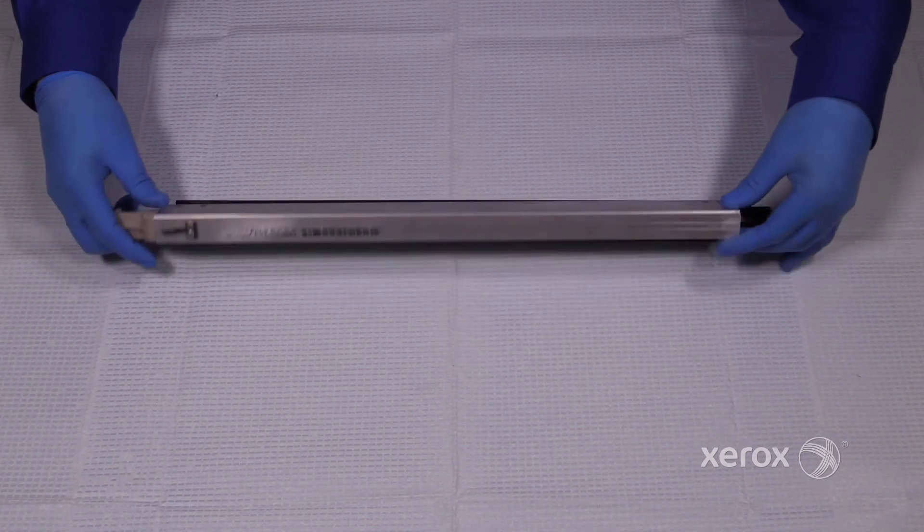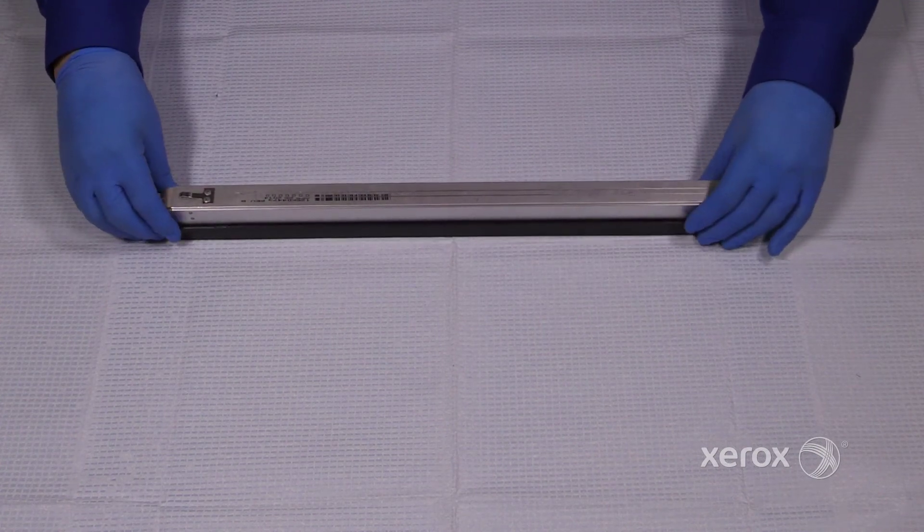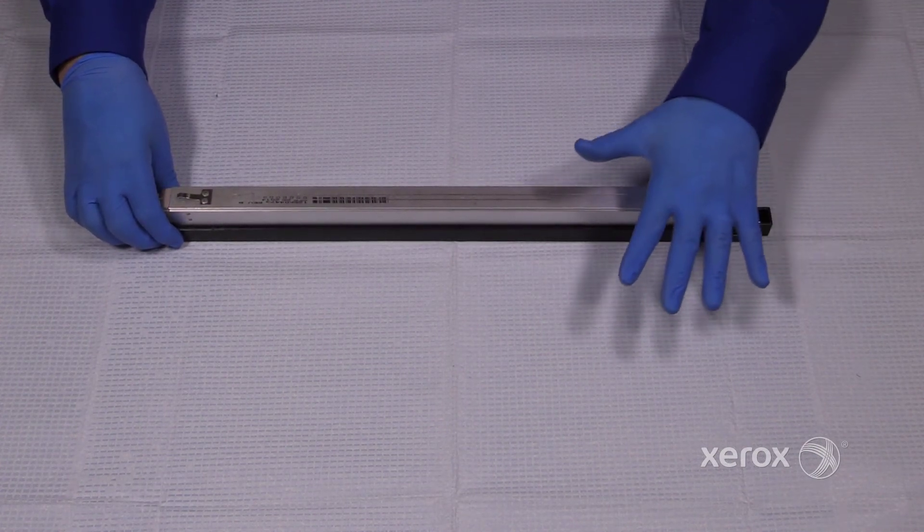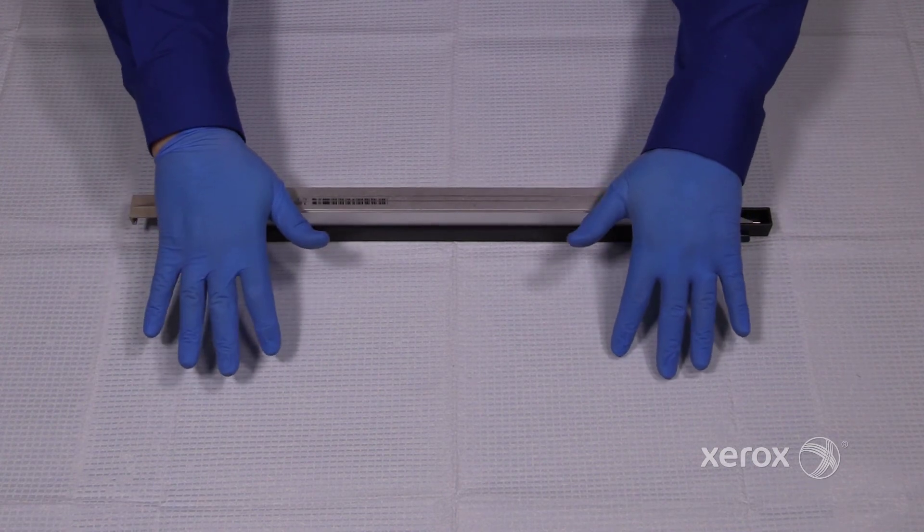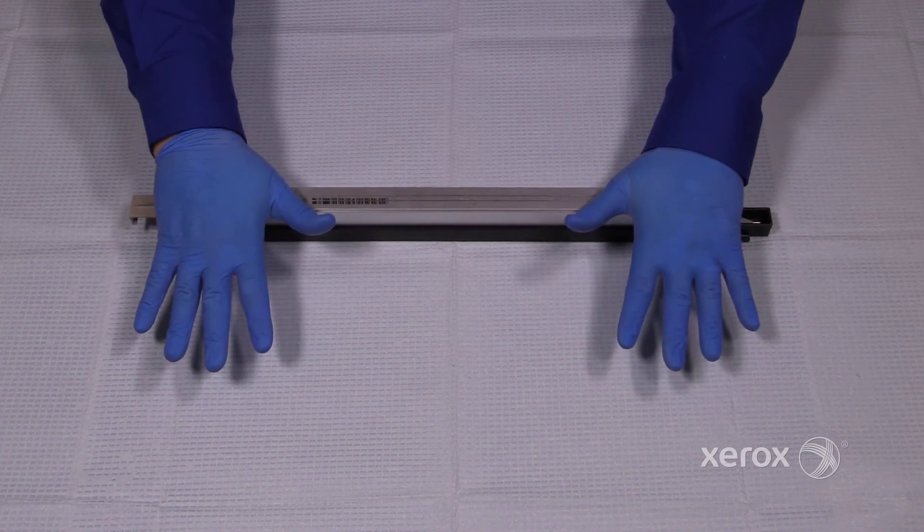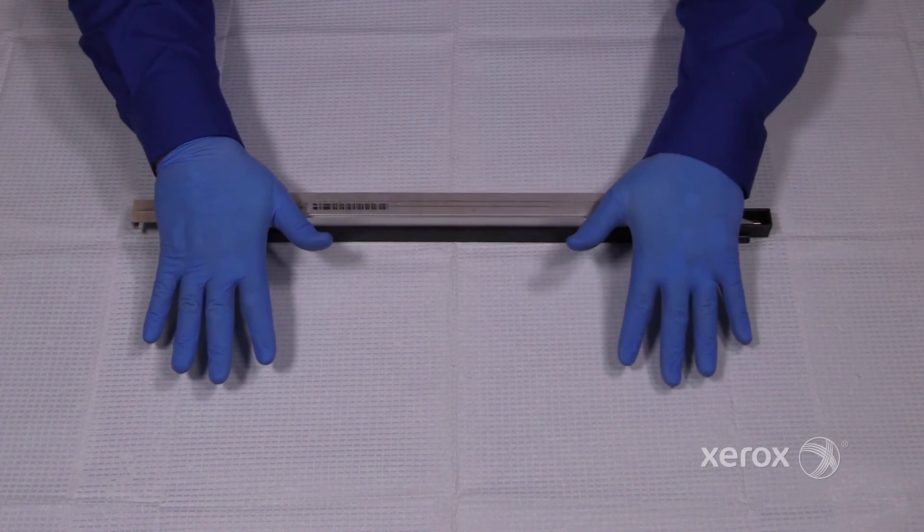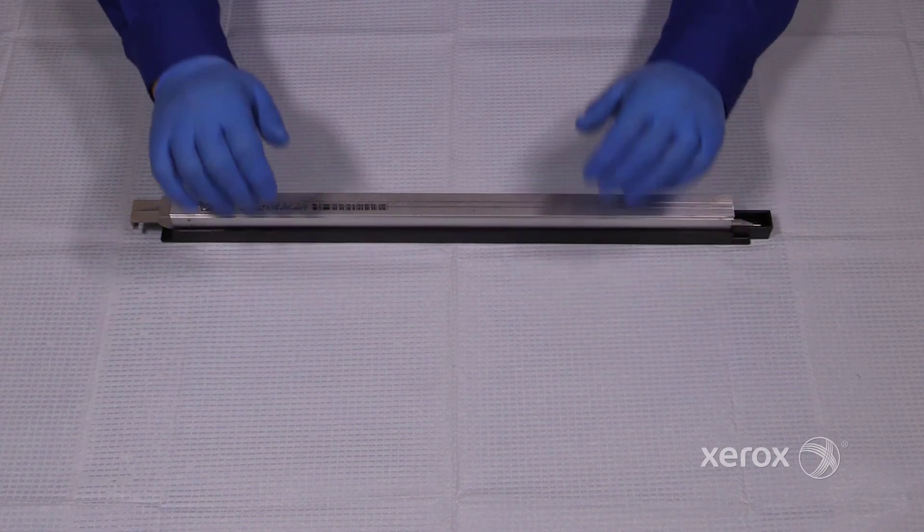Flip the Dicor assembly upside down. Place it on top of the restring kit. Take the palms of your hands and press. You'll hear it snap into position.